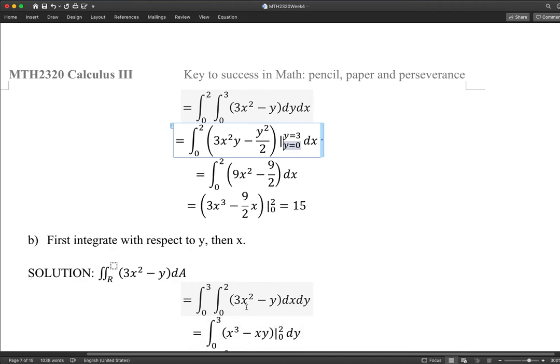Integration in terms of x first, with respect to x first. This is x cubed anti-derivative, so x squared. y is constant. I should have put y, x in the end, y times x. Still keep x first, then y. This time you're going to replace x with 2 and x with 0.